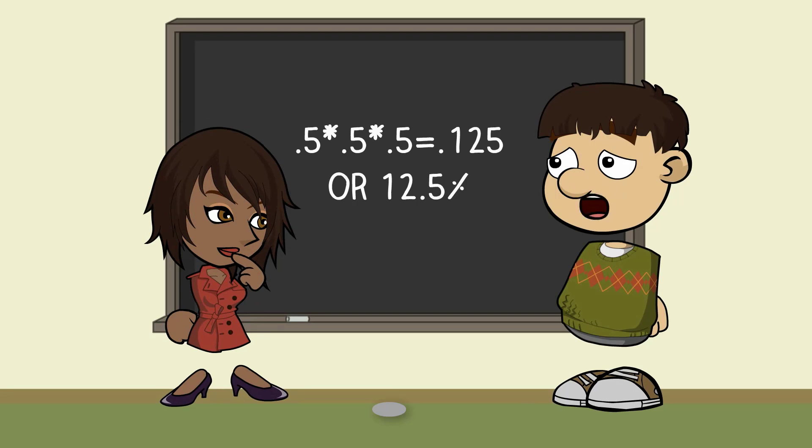Well, .5 times .5 times .5 gives a 12.5% chance of three heads in a row. I can live with that.